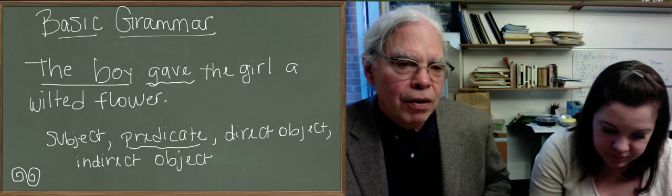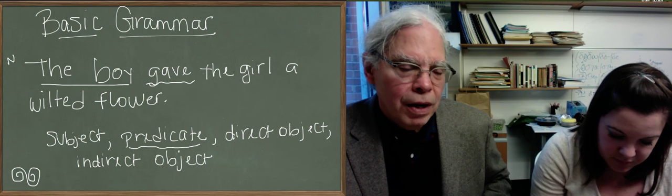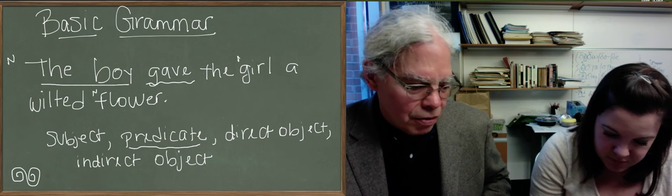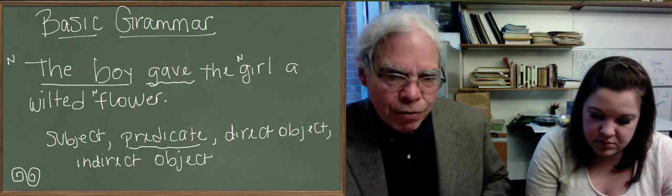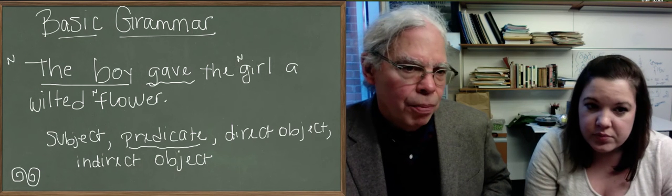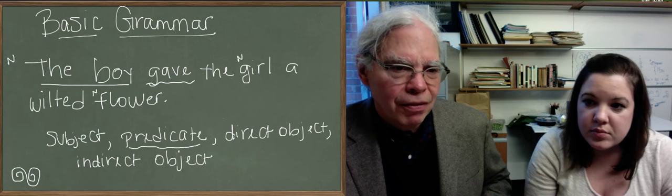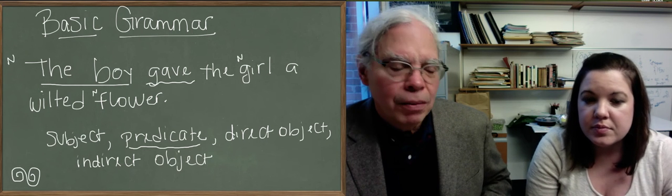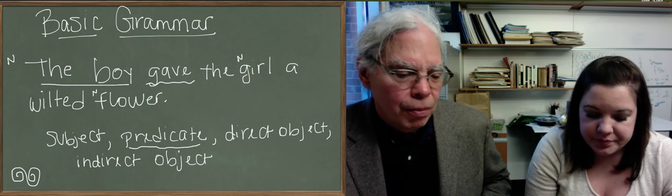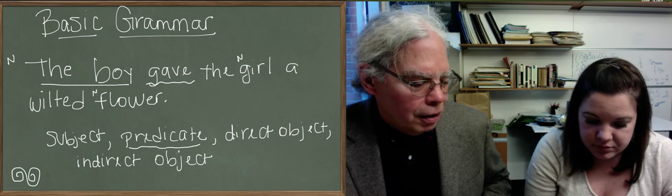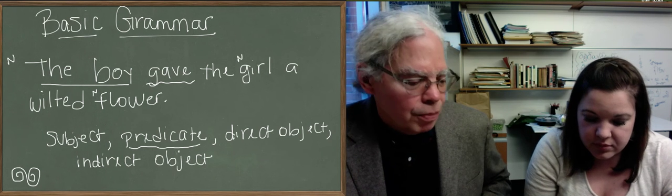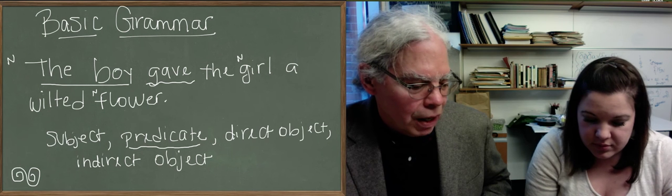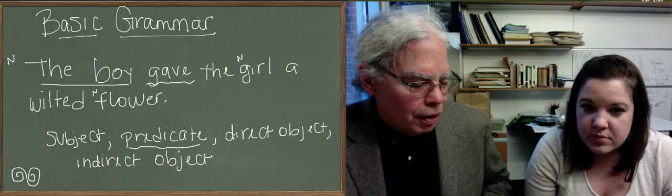And we only have one subject in a sentence. Sometimes you can have two subjects, but then you say the boy and his mother gave the girl a wilted flower. You have to coordinate them with a word like and. In this case, we've only got one subject, that's the boy, and we've got two other nouns. There's the girl and the flower, which happens to be a wilted flower.